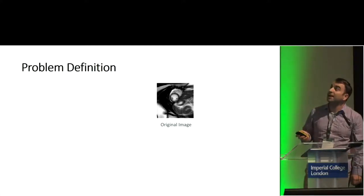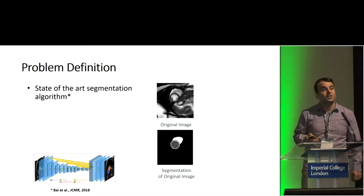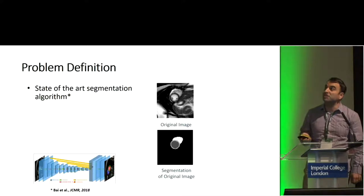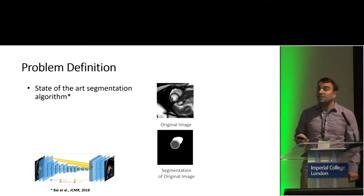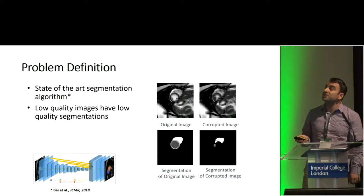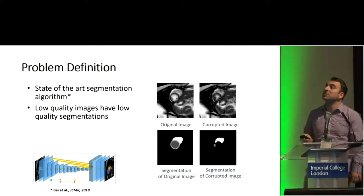Given a good quality image such as a cardiac MR image, a state-of-the-art fully convolutional neural network algorithm trained on such cases can easily detect the regions of interest such as myocardium, left ventricular blood pool, and right ventricle.